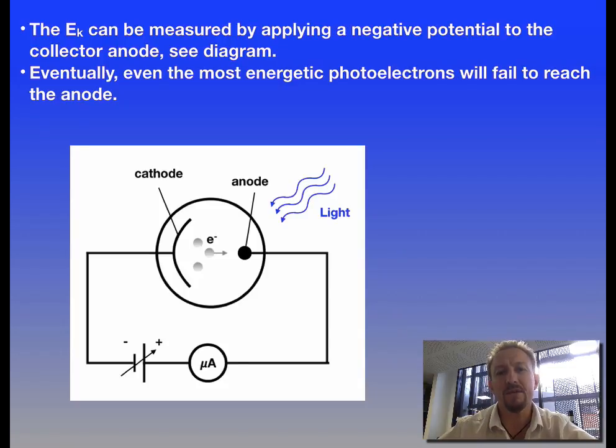Remember that the voltage is joules per coulomb so that tells us the amount of energy which is present. We know each charge of the electron is 1.6 times 10 to the negative 19 coulombs, so we can work out the joules that is necessary to prevent that charge from moving across from the cathode to the anode.